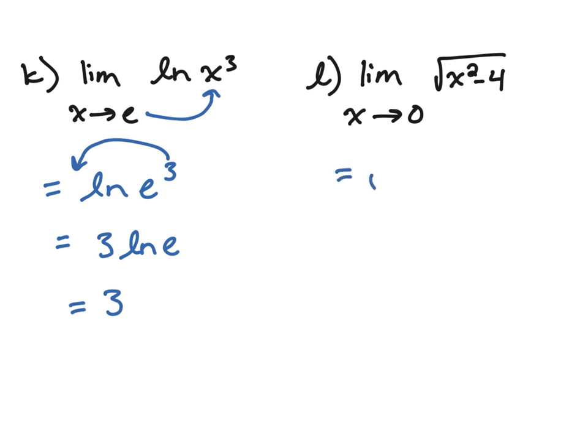Problem L – if we substitute a 0 in here, we end up with the square root of negative 4. Now that's an imaginary number. It is not a number that I can find on a graph. It is not a finite y value. So in this instance, we would say that this limit does not exist, meaning there is not a finite y value that exists on the graph of this function as x approaches 0.